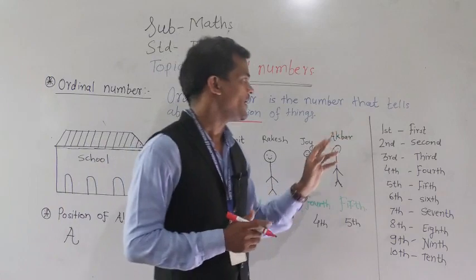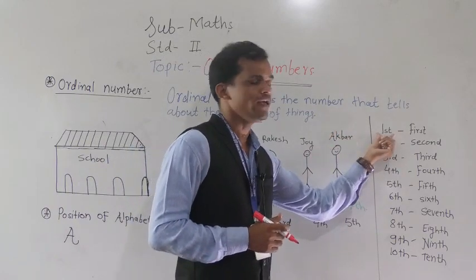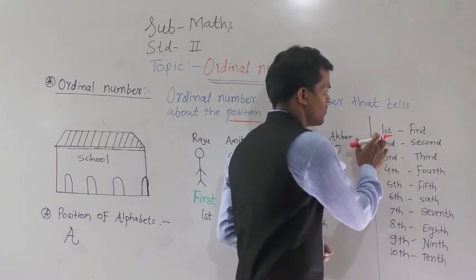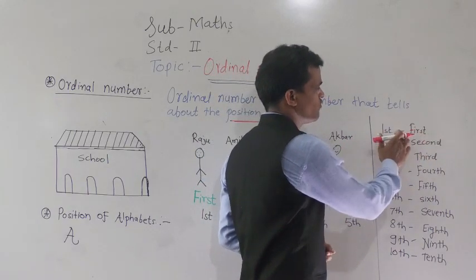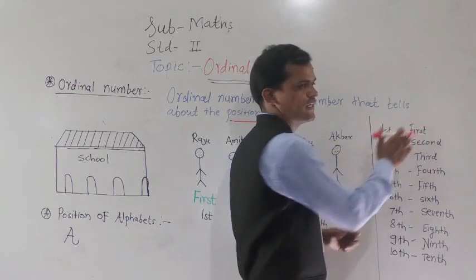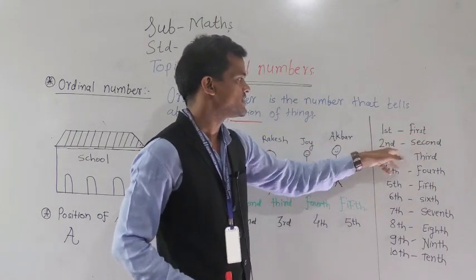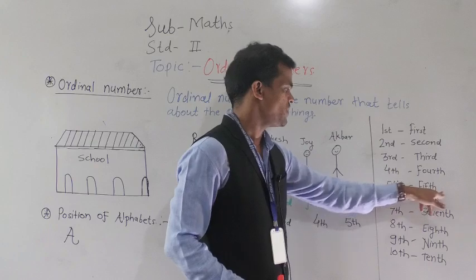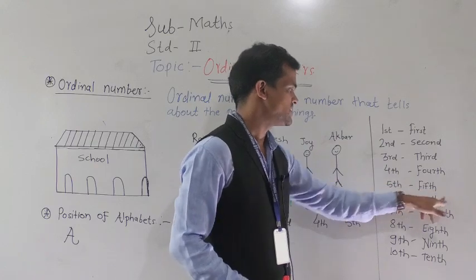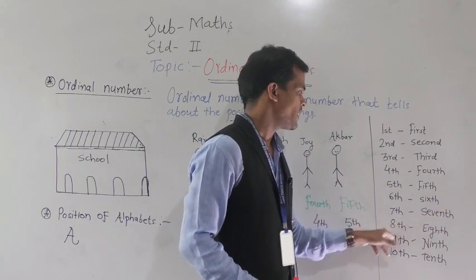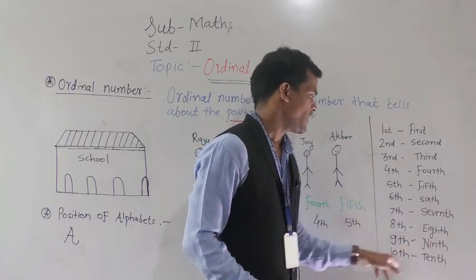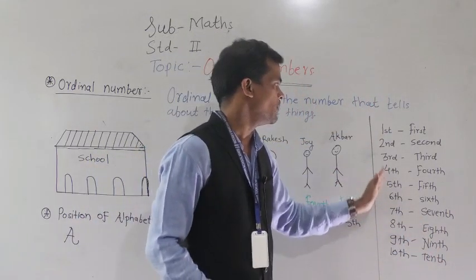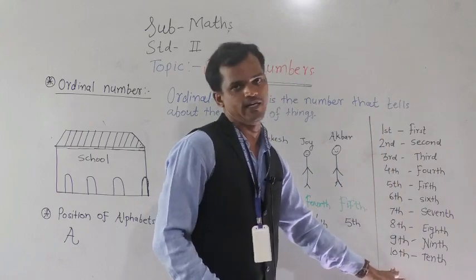So see here — first, and it is shortly denoted by a symbol. The spelling of first is F-I-R-S-T. Then second, then third, fourth, fifth, sixth, seventh, eighth, ninth, and tenth. So these are the ordinal numbers from first to tenth.